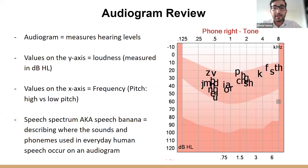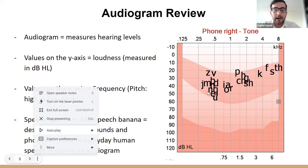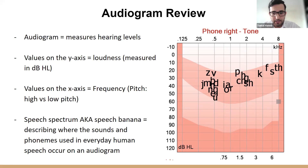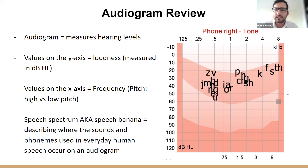As a quick recap from the last lecture on the audiogram: we use the audiogram to measure hearing levels in patients. These are measured in dBHL — that's loudness — on the y-axis, while frequency or pitch is on the x-axis. One important feature is the speech spectrum, also known as the speech banana, shown as the shaded region, which encompasses nearly all the sounds of human language, essential for communication.